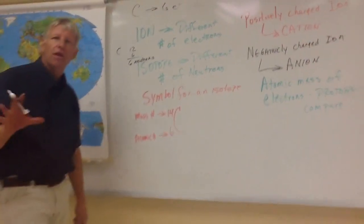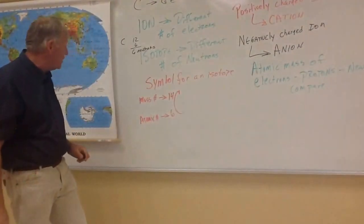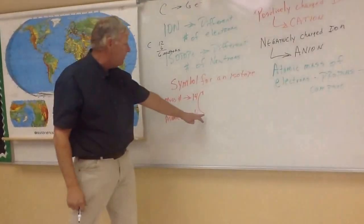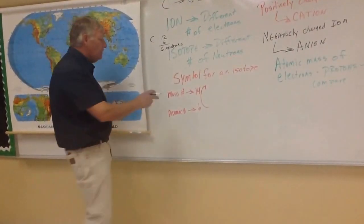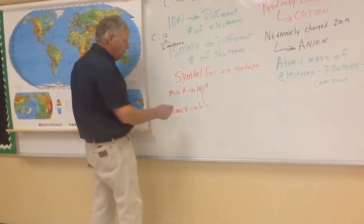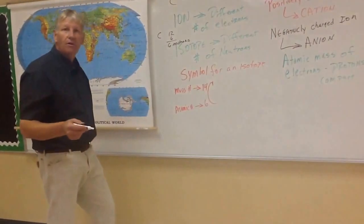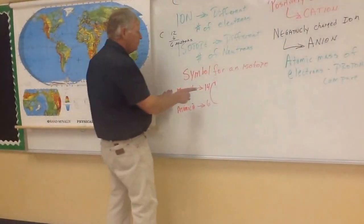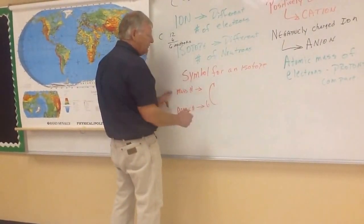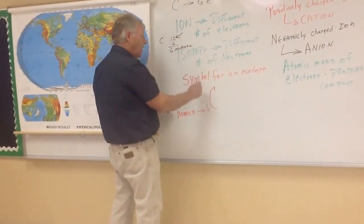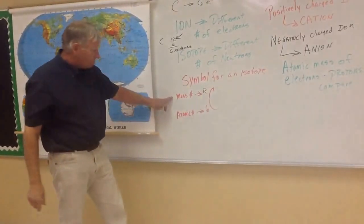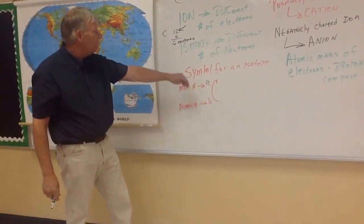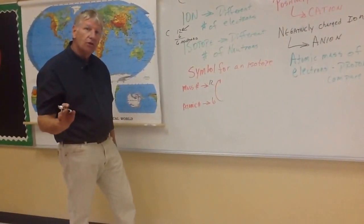This is the most missed question on your next test, so really hone in here and make sure you've got this. How do we write a symbol for an isotope? We write the chemical symbol of the element — this is going to be an isotope of carbon, so we put carbon there. The atomic number goes on the bottom to the left of the element. Carbon's atomic number is six, so it would always be six. The mass number for carbon is 12 — we can find that from the periodic table. If I put a 12 there, it wouldn't be an isotope, because the mass number is the number of protons plus neutrons. Anything other than 12 is going to be an isotope.